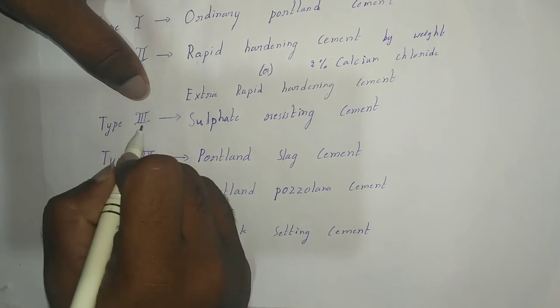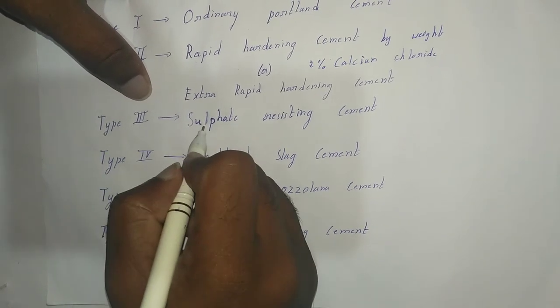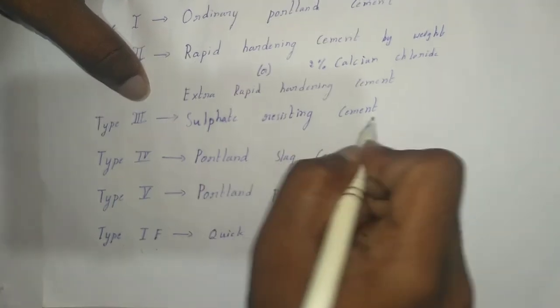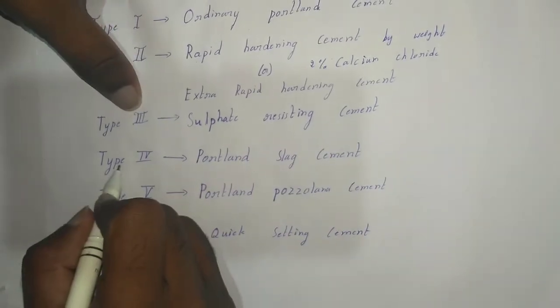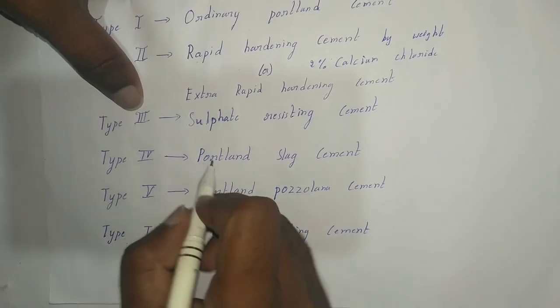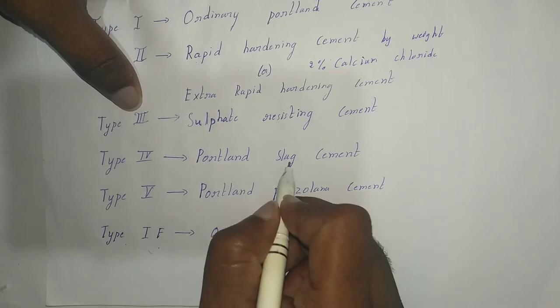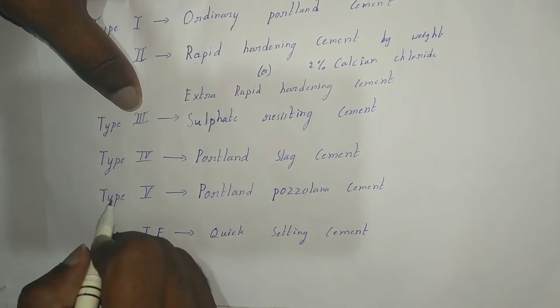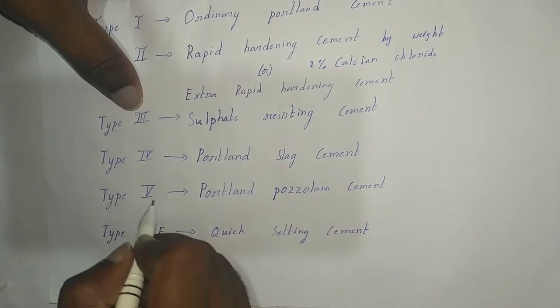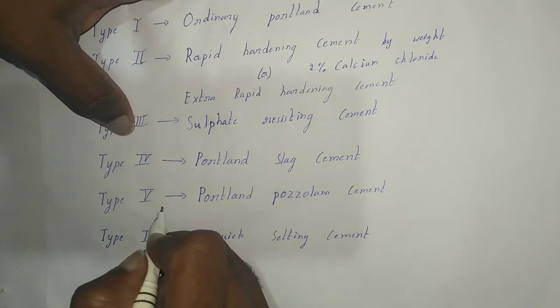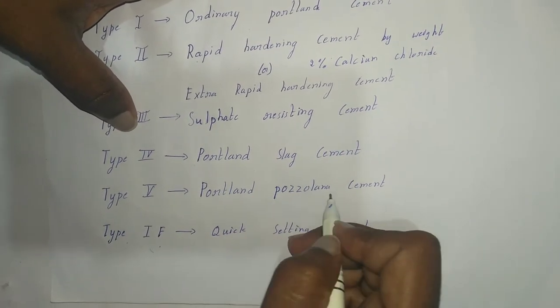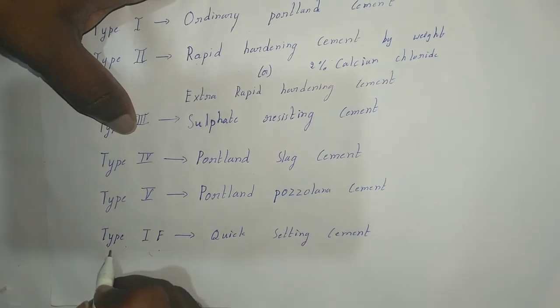Type 3 Cement is Sulphate Resisting Cement. Type 4 Cement is Portland Slag Cement. Type 5 Cement is Portland Pozzolano Cement.